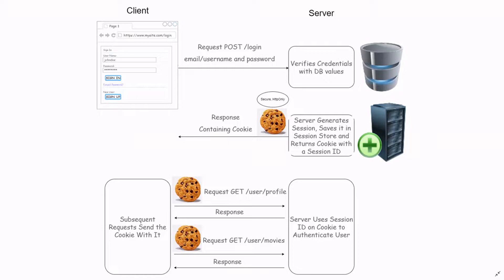In quick review: the user is going to fill out the login form with their username and their password. When the user hits the submit button, it's going to send the username and the password on a POST request back to the server. The server is going to check this versus what it has in the database, and if the password matches the username, we're going to log them in by creating a session that we save on the server.